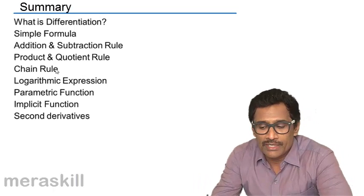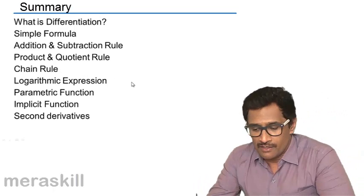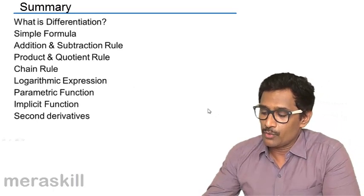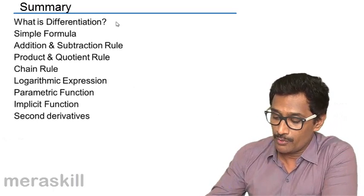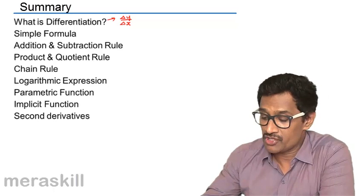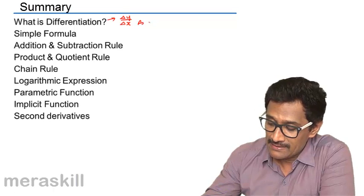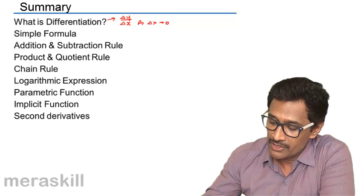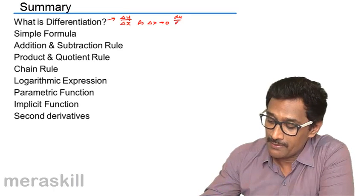Okay, so when it comes back to index, let us quickly give a review of what we did. We did about differentiation. It's nothing but change in y for a corresponding change in x as delta x approaches 0. And we said that this is dy by dx.